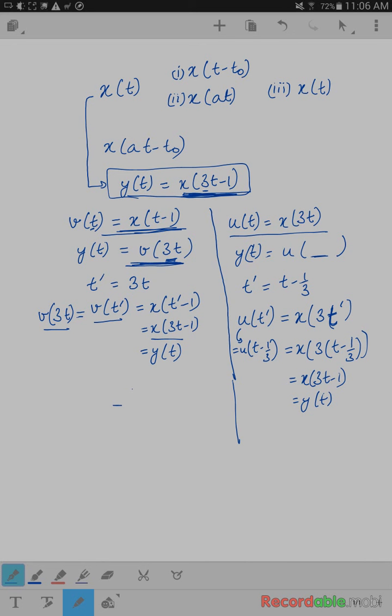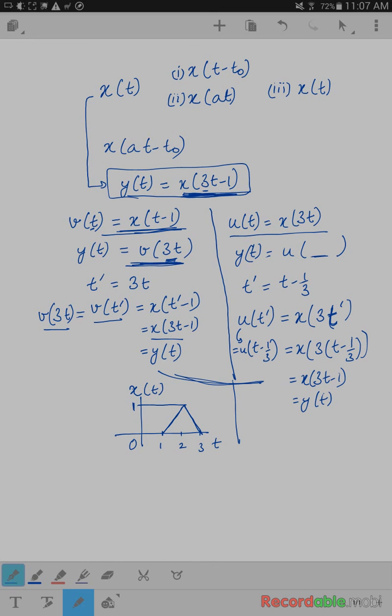So what I would do is I would encourage you to compute these transformations for the example that we discussed in the class, the triangular function. If I remember correctly, the triangular function looked like this. It was a 1, 2, 3, and this was my x of t, 1. So just make sure that you get the same answer by using either of these two techniques, and that it matches with the answer in the class. Thank you.